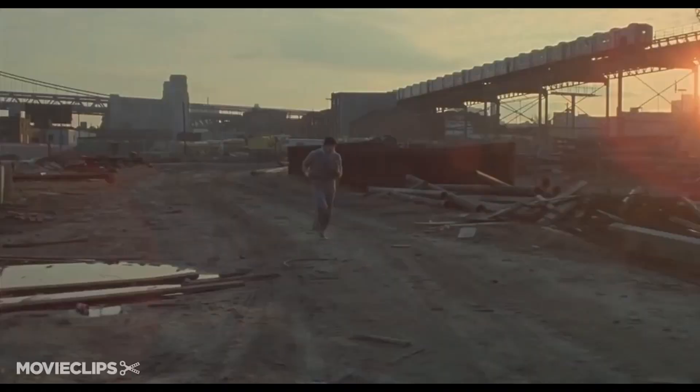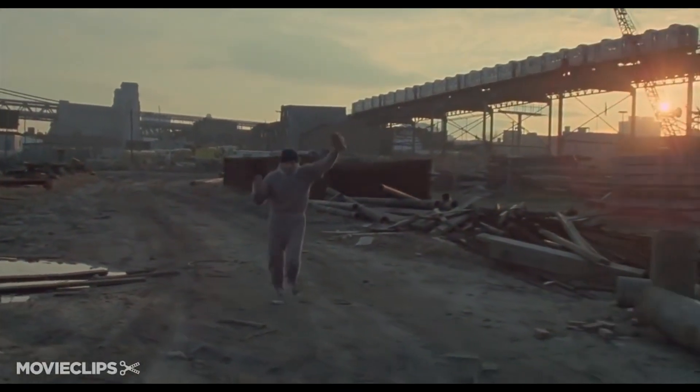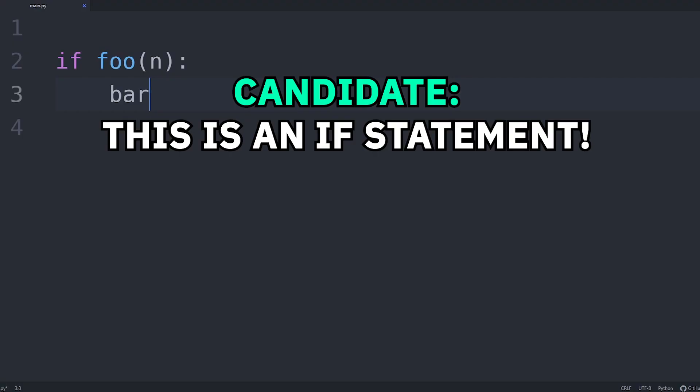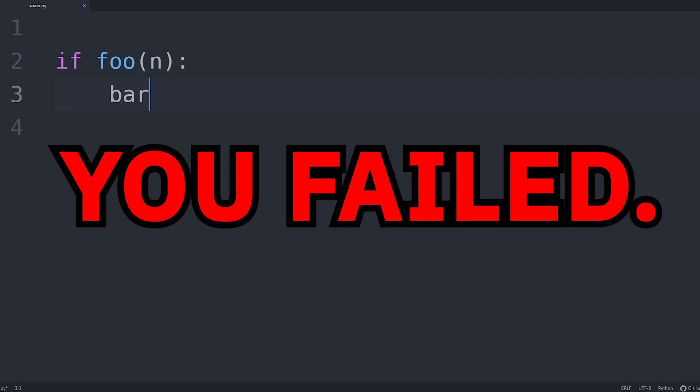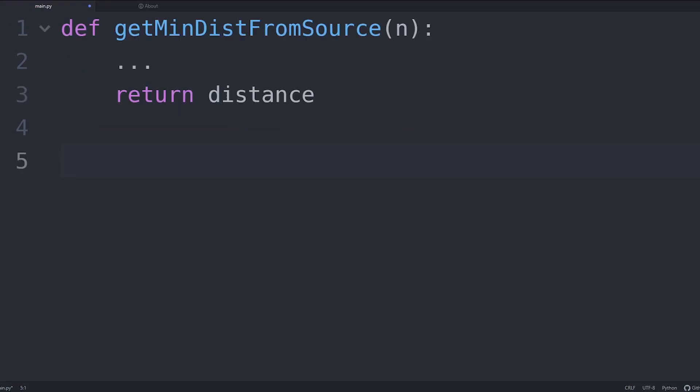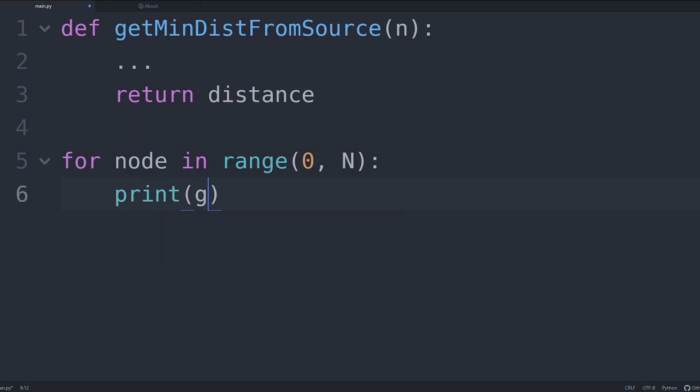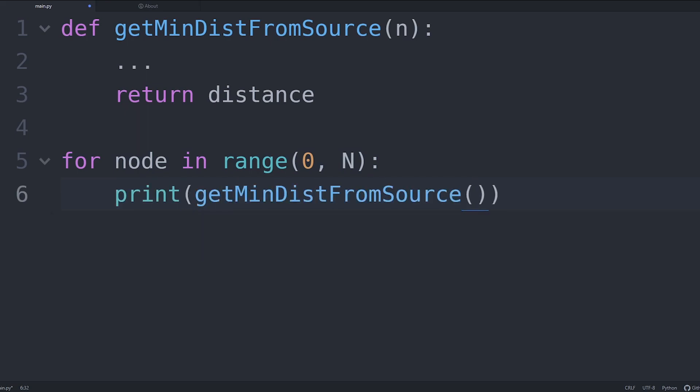Being able to find the balance between no explanation and over-explanation is something that comes with practice. We don't want to over-explain by restating an if statement, and rather, it's more important to explain chunks of your code in human-readable logic. For example, I wouldn't say this is a for loop that goes from 0 to n and calls the function get min dist from source i. Instead, I could say we loop through all possible nodes and find the shortest distance from that node to the source.